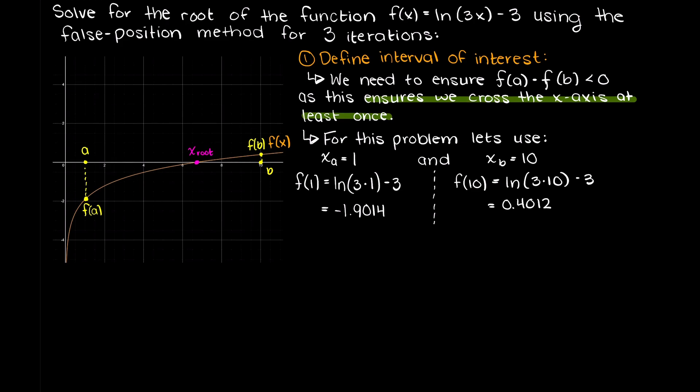Now, we can do a product test whereby we multiply the output of our two inputs, and if there is a root in between them, we will get a negative value in return. As you can see, this is clearly the case. Therefore, we are now ready to move onto our first iteration.